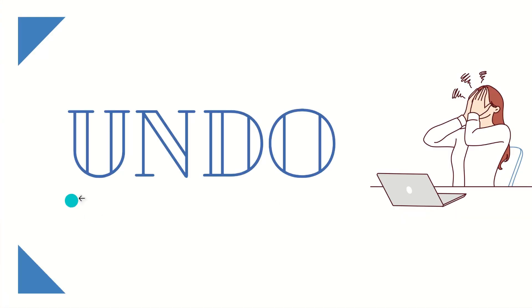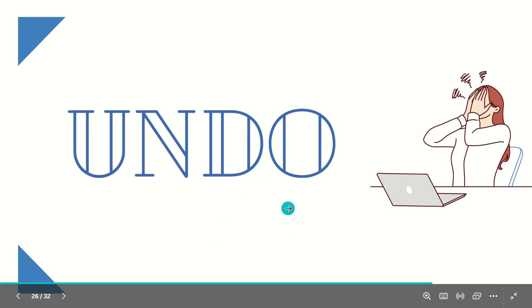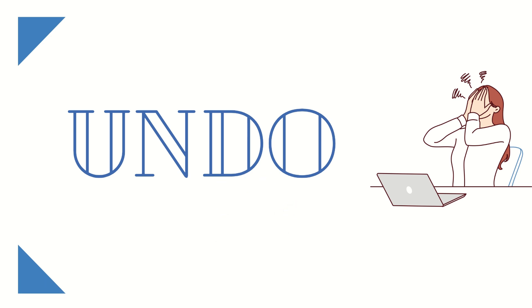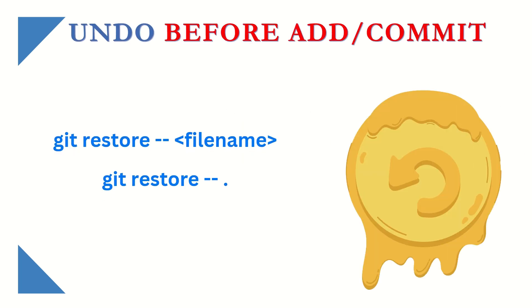Let's talk about a very important tool: undo. Everyone makes mistakes, but only lucky people get a chance to recover from those mistakes. You're lucky if you're using GitHub, since GitHub tracks all the things we are doing, so we can revert any mistake we made. The mistake we make with our code can be reverted using GitHub or Git Bash.